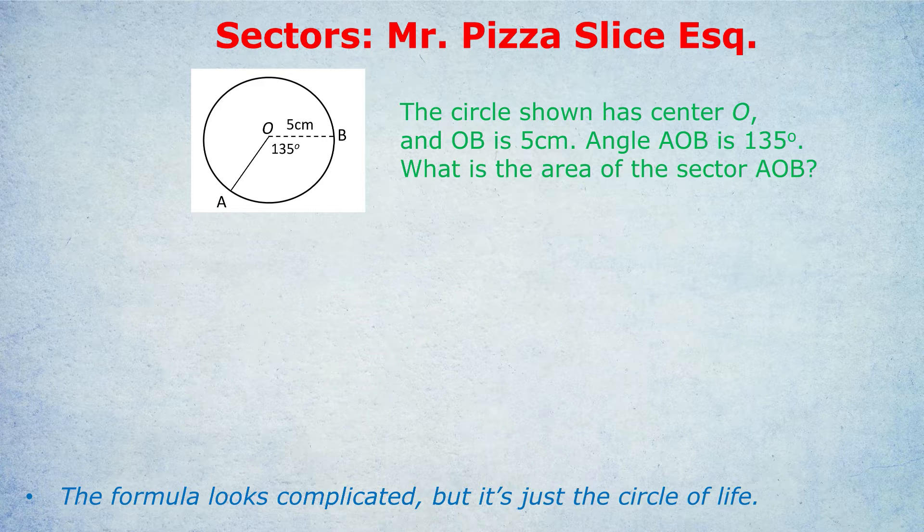How do we work out the area of sectors? Because that's usually what the GMAT or the GRE is asking for, or at least that's involved in the question. Let's take this specific example. I'm going to show you the formula and show you why it works. The circle shown has center O, and OB is 5 centimeters. If you look at the diagram, OB, the dashed line, is the radius. Angle AOB is 135 degrees. What is the area of sector AOB?